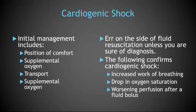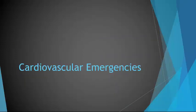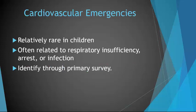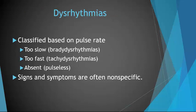Treat dysrhythmias as if they are present and contributing to shock. Moving into cardiovascular emergencies — these are rarely seen in children, often related to respiratory insufficiency, arrest, or infection, and you should be able to identify them through your primary survey. The dysrhythmias you may experience are classified based on pulse rate: bradydysrhythmias or too-slow, tachydysrhythmias or too-fast, and pulseless or absent. Follow the particular algorithm for each of these.